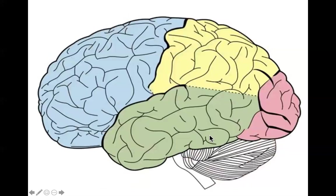We have the frontal lobe, parietal lobe, temporal lobe, occipital lobe, and the cerebellum. The frontal lobe is primarily responsible for higher thought and motor function. The parietal lobe's primary function is sensory, and it integrates with the frontal lobe to initiate movements in response to stimuli. The temporal lobe is responsible for language, math, art, and auditory interpretation. The occipital lobe is the primary visual cortex, responsible for interpreting visual stimuli. The cerebellum is responsible for balance and coordination of automatic skeletal movements like walking and running.